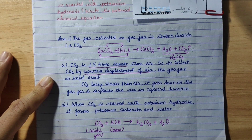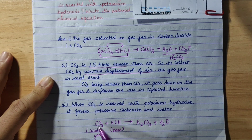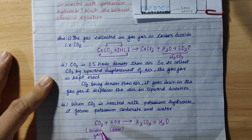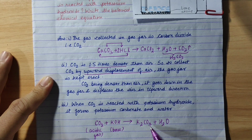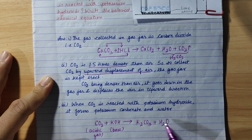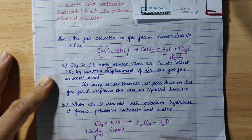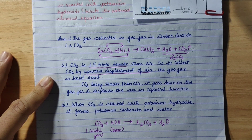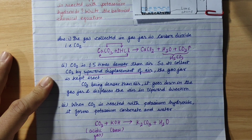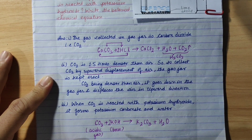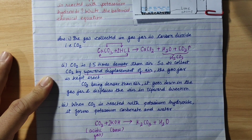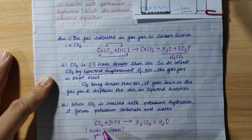Balancing the equation: Carbon dioxide — oxygen count is 3, then 2 plus 1 is 3. Hydrogen is 2. Chlorine count checked. Balancing oxygen: 4. Potassium balance: 2 on each side. The equation is balanced step by step.